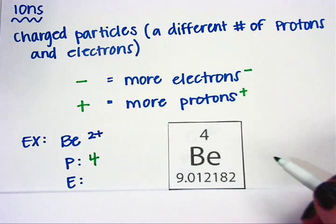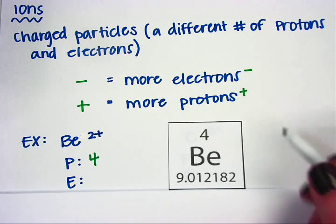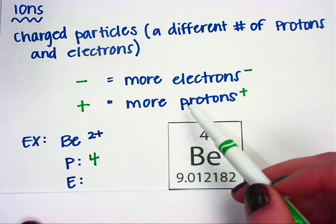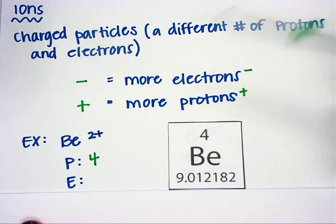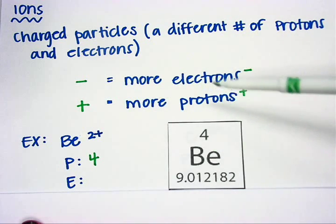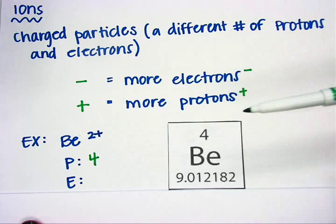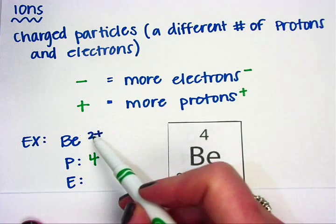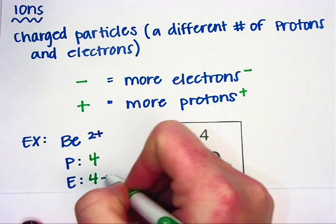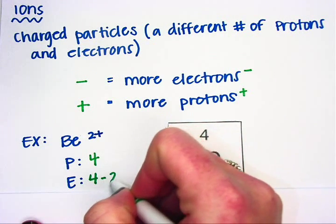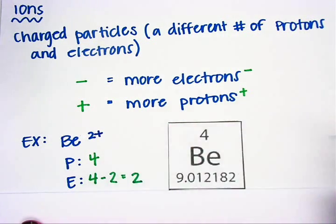Then I'm going to compare to get my number of electrons. Since this is a positive charge, that means I have 2 extra protons. The positive tells me I have more protons, and the number tells me how many. So 2 extra protons means I subtract to get my electrons. 4 minus 2 gives me 2 electrons.